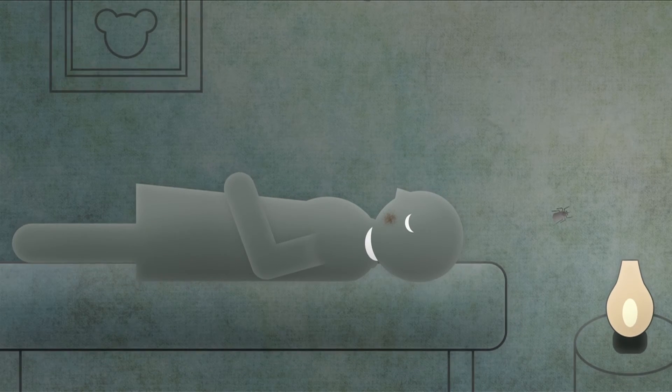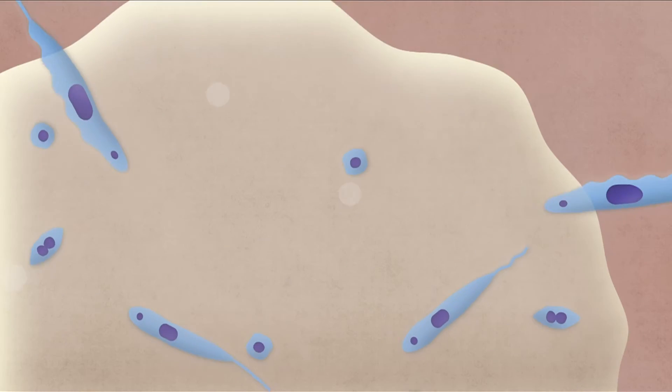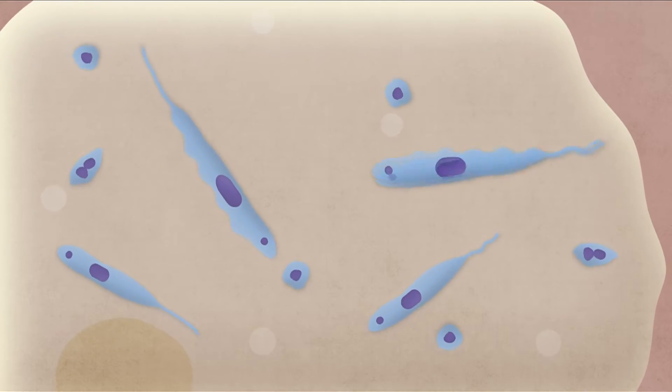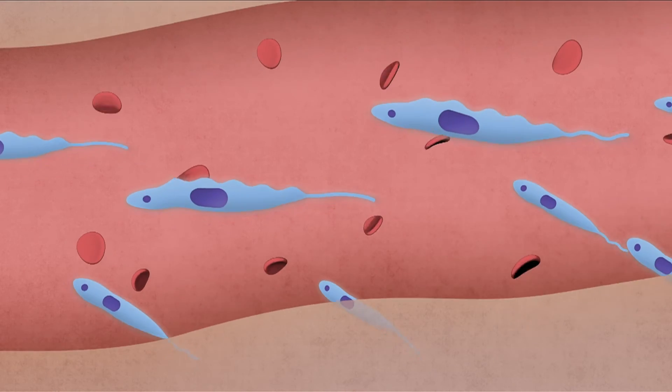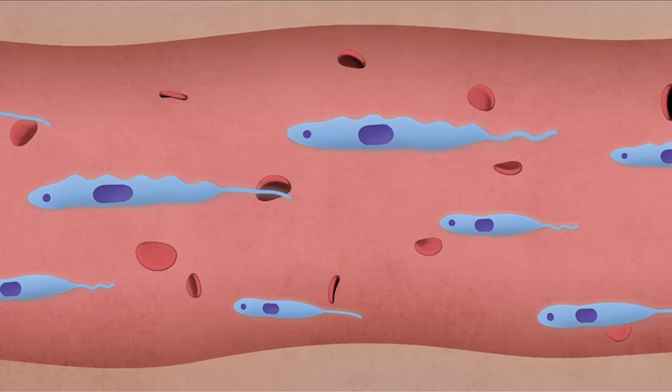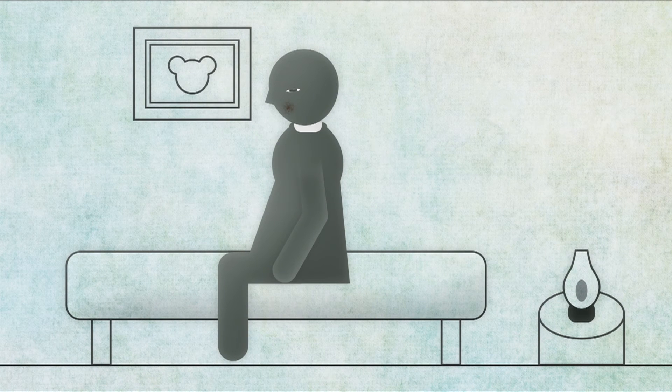The parasite that causes Chagas disease transforms throughout its life cycle. The parasite penetrates the tissue cells and multiplies before entering the bloodstream. Once in the bloodstream, it infects even more cells.